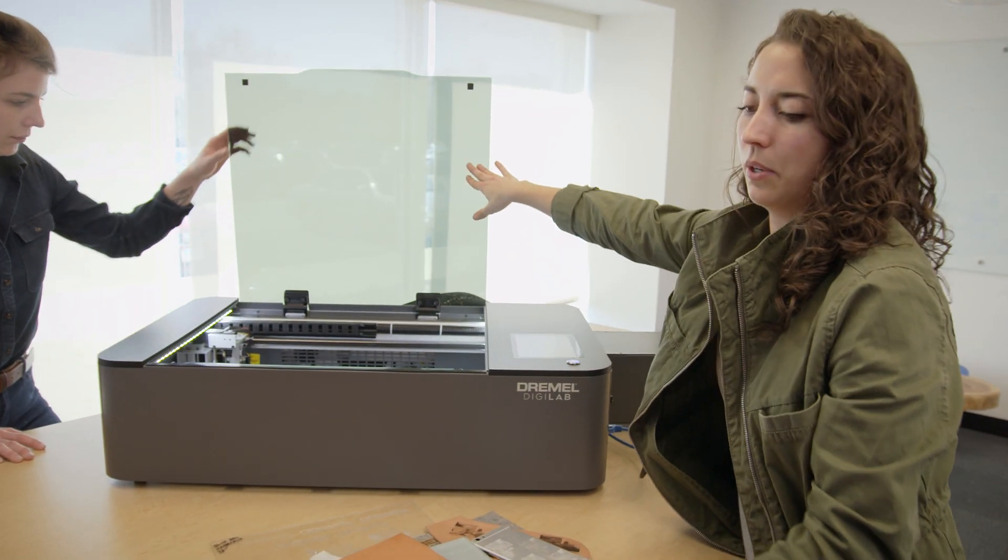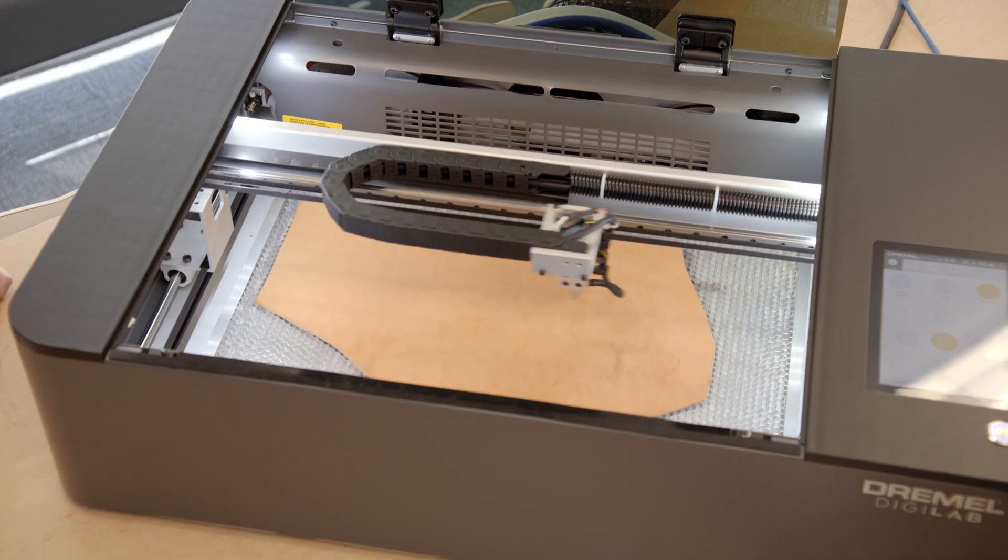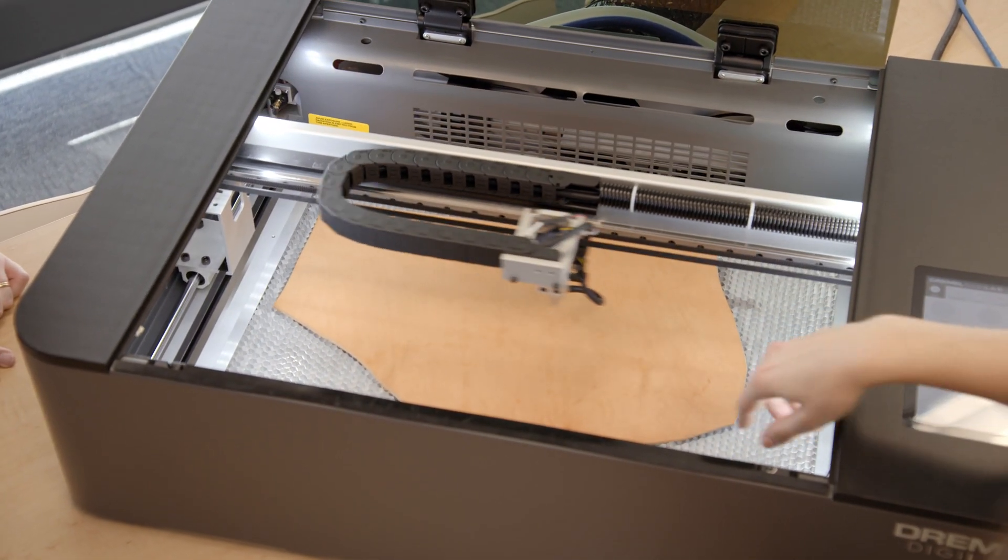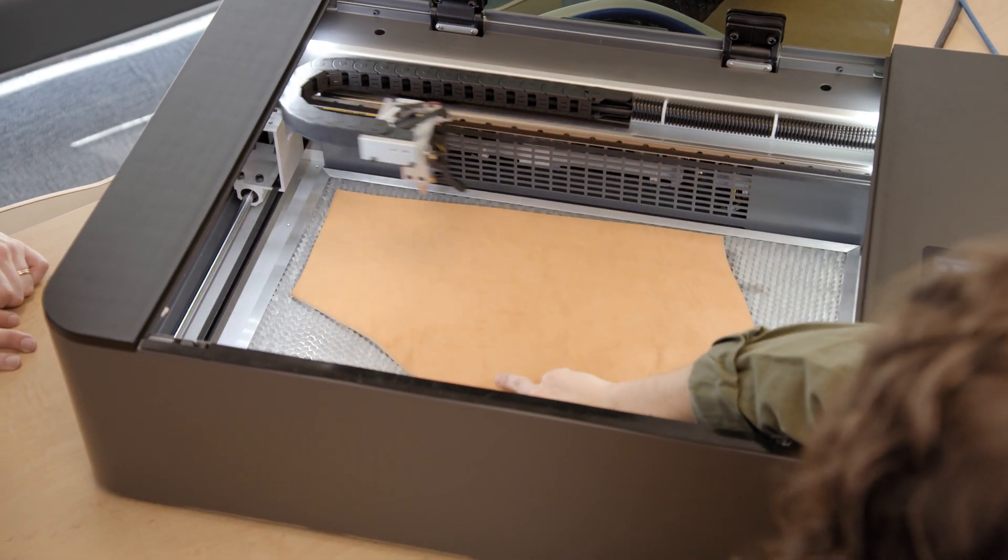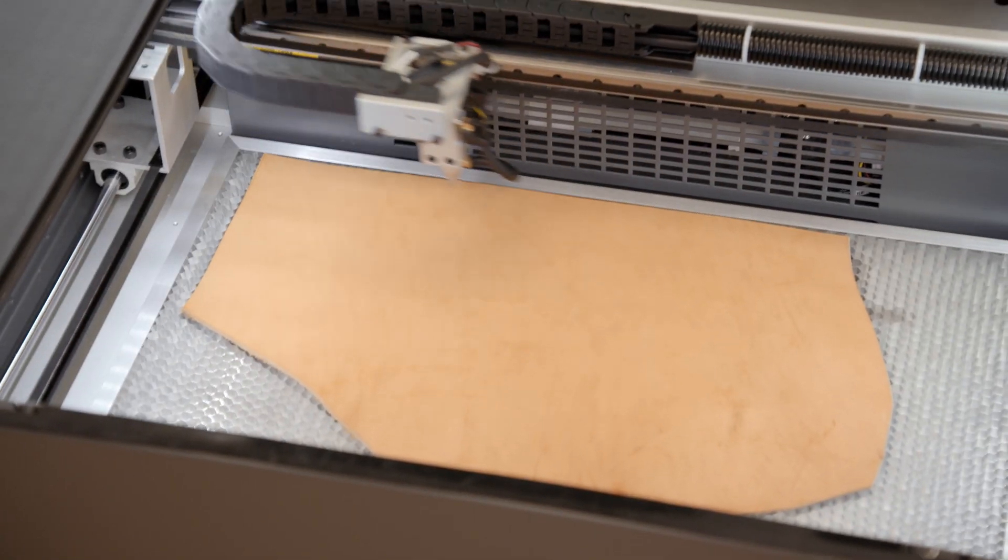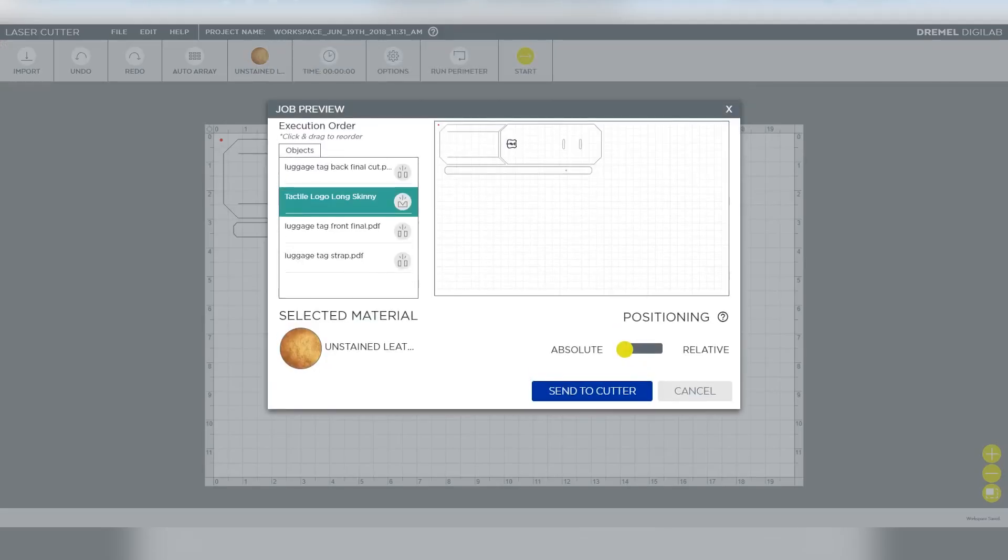Next we're going to place the material into the laser. We can go ahead and run the perimeter. That's going to show you roughly the boundaries. You can see that this leather piece isn't perfectly straight, so we're going to want to just make sure that we get the file on the leather piece.